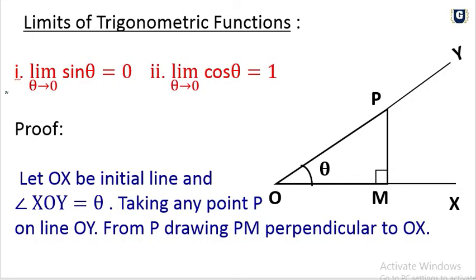Limit of trigonometric functions. Number one: limit as theta tends to 0, sin theta is equal to 0. Number two: limit as theta tends to 0, cos theta is equal to 1.